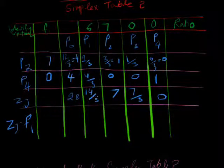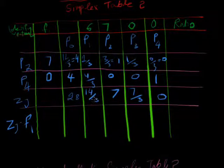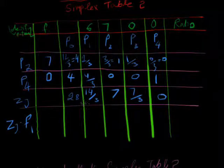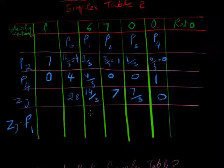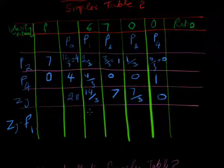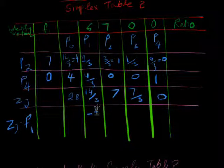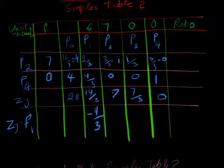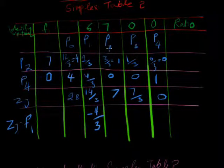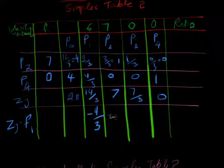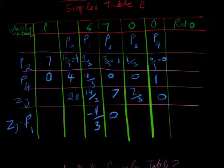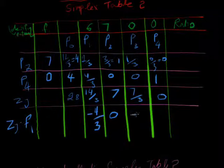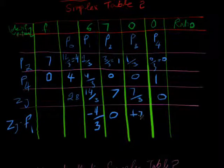14 divide 3 minus 6, we calculate it, and it will be minus 4 divide 3. 7 minus 7 is 0. And 0 minus 0 will be plus 7 divide 3.